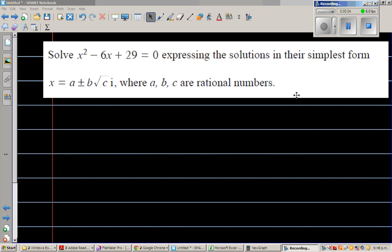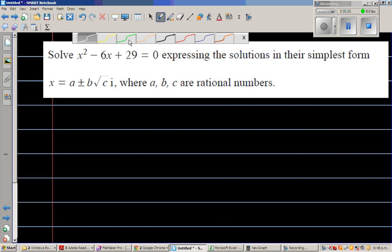Solve x² - 6x + 29 = 0, expressing the solutions in their simplest form x = a ± b√c i, where a, b, c are rational numbers. This is a complex equation, so we're going to use the method called solving by completing squares.